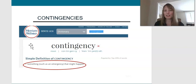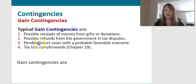We don't know the final amount because it's going to be determined in a future accounting period. The question is: do we book a gain or loss this accounting period? Let's start by looking at the accounting rules for gain contingencies.